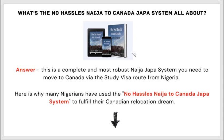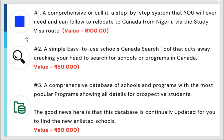Whether you have tried many times or this is your first time and you want to nail it, you need a program like the No Hassle Nigeria to Canada Japa System. Let's see why many Nigerians have used this program to fulfill their Canadian relocation dream. Number one benefit: you get a comprehensive step-by-step system to follow to relocate to Canada from Nigeria via the study visa route — valued at 100,000 Naira.